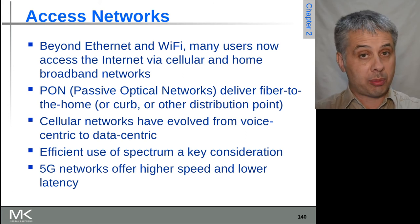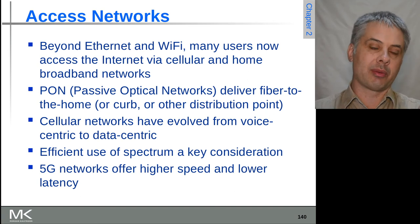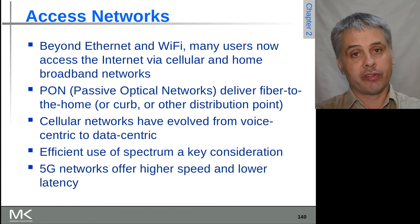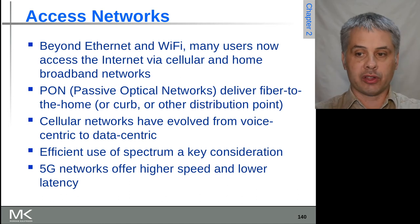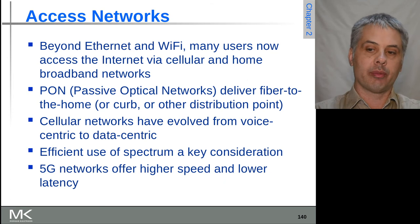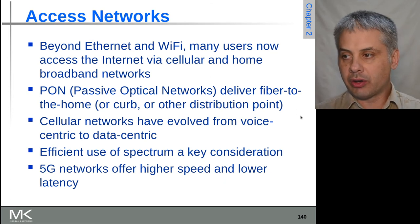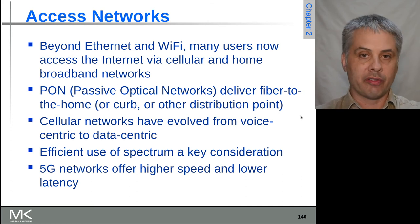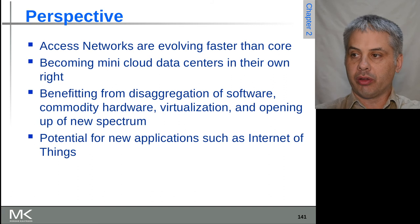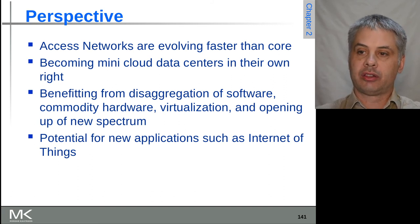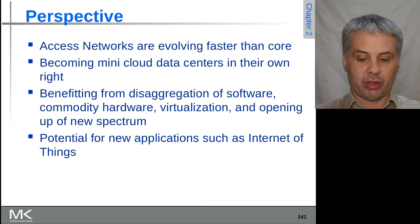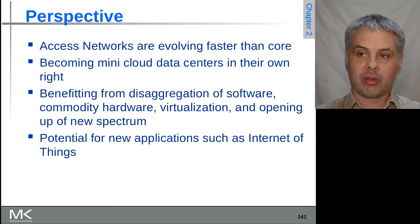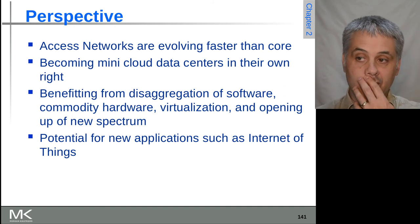4G dealt with the packet loss problem, but latency and bandwidth limitations remain compared to, for example, a home fiber connection. 5G is trying to solve the speed problem and further reduce latency to be at least as competitive as home fiber setups. All these technologies used for internet access are often called access networks, providing that last kilometer or few kilometers of connectivity to the internet.